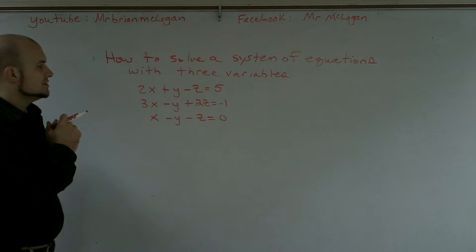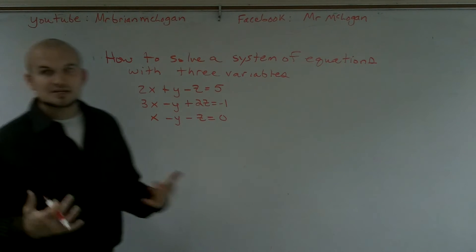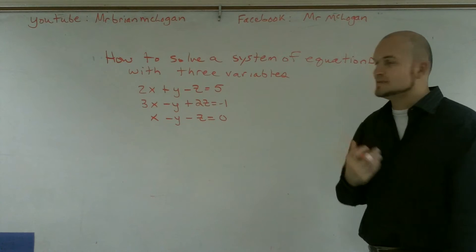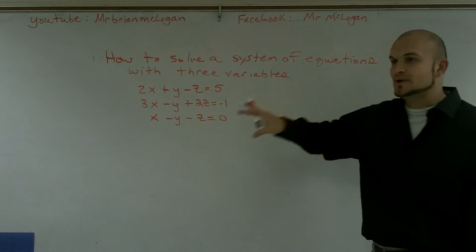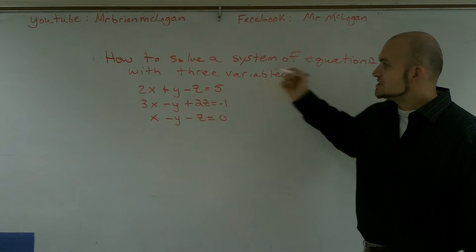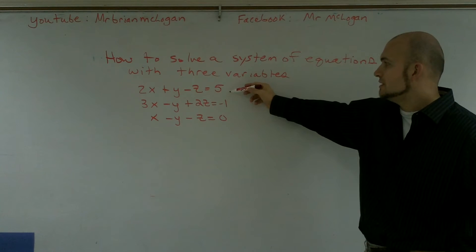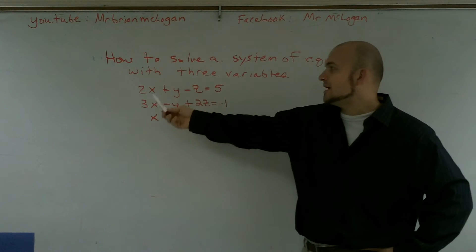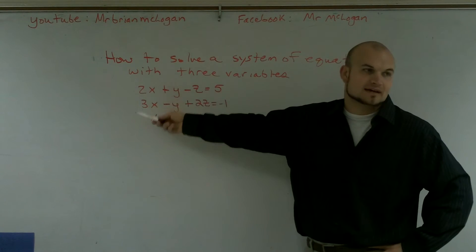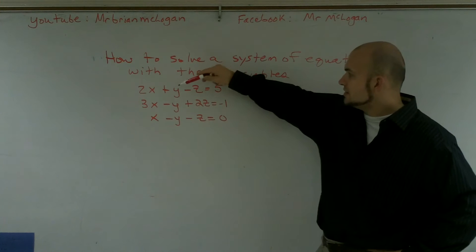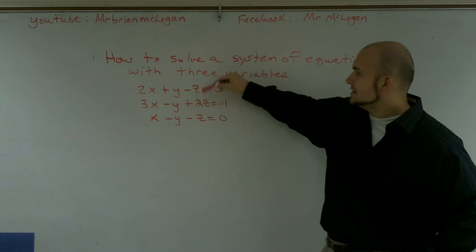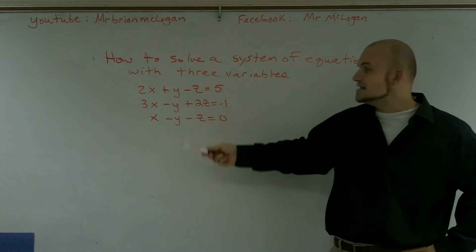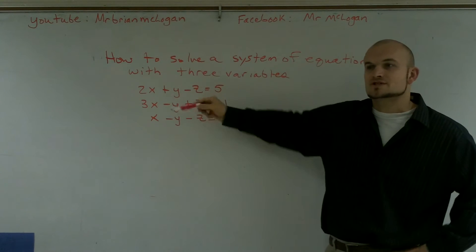The first thing we need to do is start eliminating variables using the elimination method, and we need to decide which variable is going to be the easiest to eliminate. If we look at the top two equations, x has two different coefficients — I'd have to multiply the top by three and the bottom by two to get a common coefficient of six. However, these already have a common coefficient, so y is definitely the easiest. Looking across all three equations, the y's all have the same coefficient.